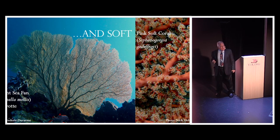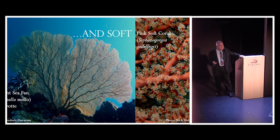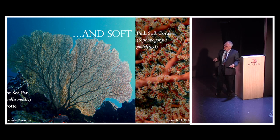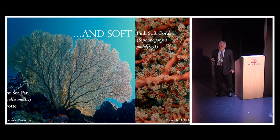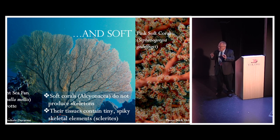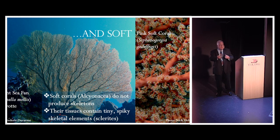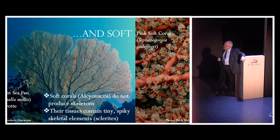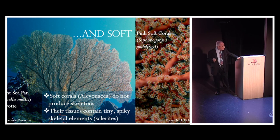There are also soft corals — they're not really reef builders, more think of them as reef decorators. They produce all these lovely sea fans, sea whips, and soft corals, but they don't build those calcium carbonate skeletons that hard corals do. Instead, their tissues are full of tiny spikes called sclerites that give their form some structure and stability, but they're not reef builders like the stony corals.